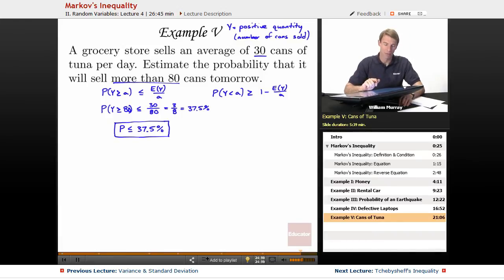So, let me recap how we did that. We started with the basic version of Markov's inequality, P(y ≥ a) ≤ E(y)/a. And I went ahead and wrote down the reverse version because when I wrote down the basic version, I accidentally switched the inequalities. Since we're selling more than 80 cans, that means we want the positive version of Markov's inequality, the more than version.